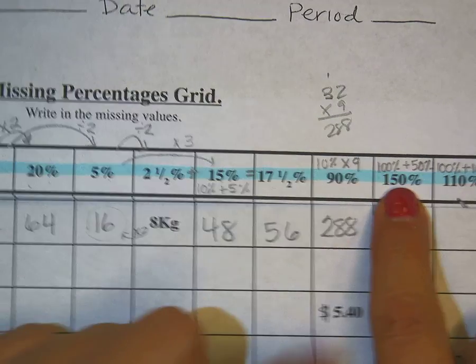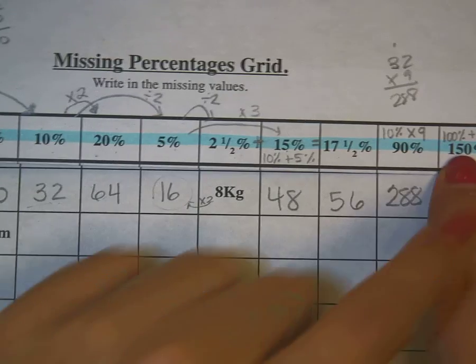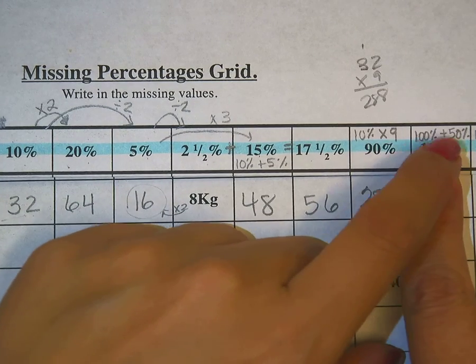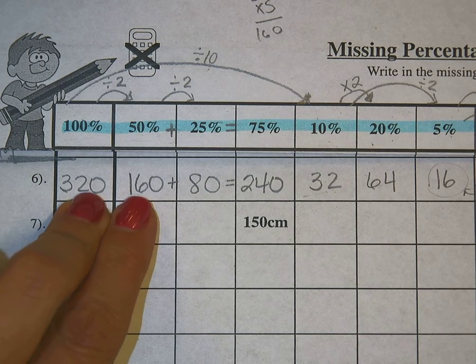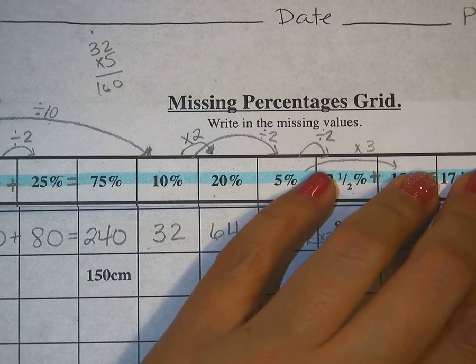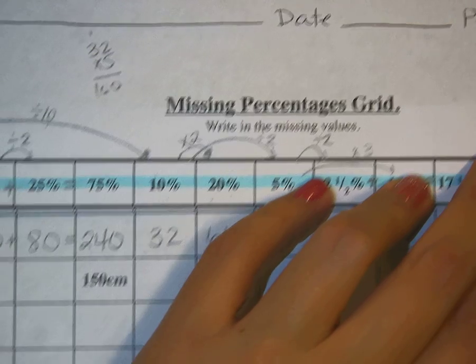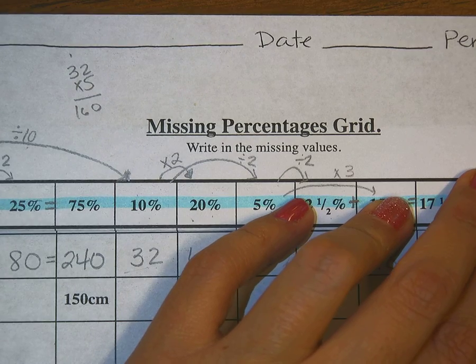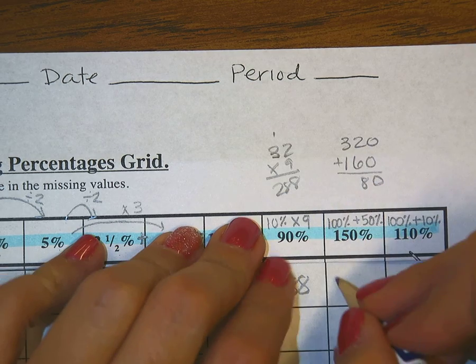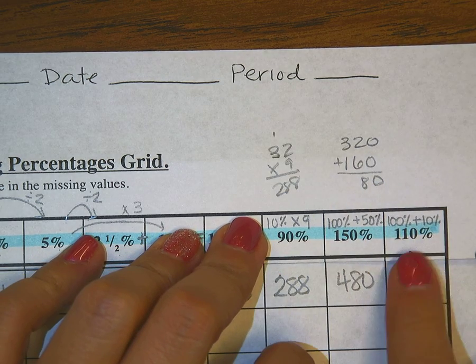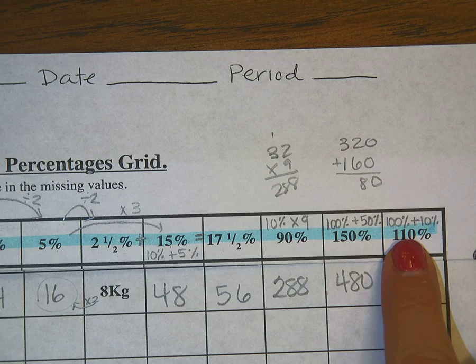Almost finished. 150%. The reminder here says 100% plus 50%. So I can take these two and add them together. That's going to be 320 plus 160. So I'm pulling to the side to do that. 480.